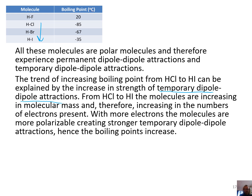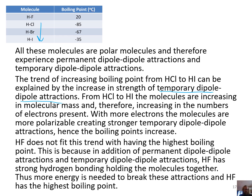But HF doesn't fit that pattern. If it followed the trend, HF's boiling point would be around -100°C. But it's actually about 120°C higher than expected, and that is because of hydrogen bonding. Alongside the permanent and temporary dipole-dipole attractions, HF also has hydrogen bonds, which are very strong and therefore require more energy to break. That's why it has the highest boiling point of these molecules.